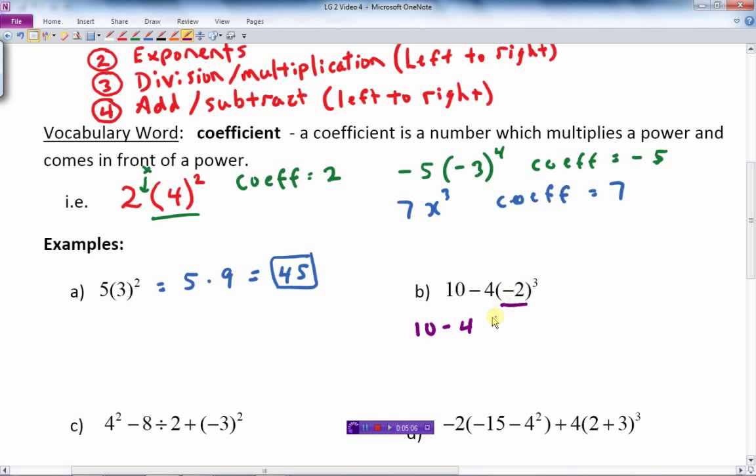That's a coefficient of 4 in front of that. Negative 2 cubed is negative 8. It's going to be 4 times negative 8.